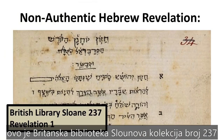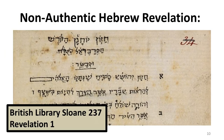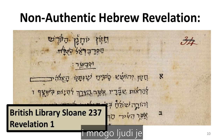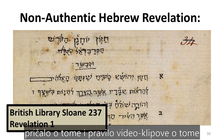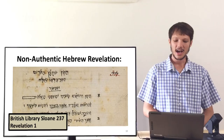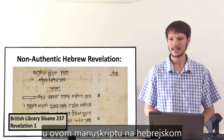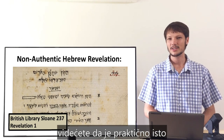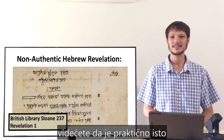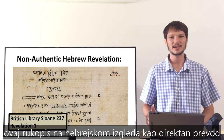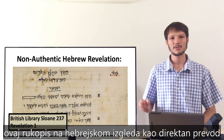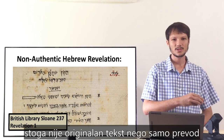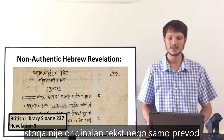Here's an example: this is the British Library Sloan 237, a manuscript that has received a lot of hype on the internet with many videos made about it. However, if you carefully compare the text in this Hebrew manuscript with the Syriac Peshitta, you will see they are virtually the same. This Hebrew manuscript seems to be a direct translation from the Peshitta Aramaic back into Hebrew, so it's not the original text — it's just a translation.